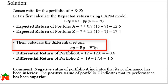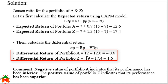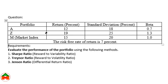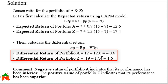Alpha p indicates the differential return, calculated by deducting the expected return from the actual return. For Portfolio A: actual return is 12%, expected return is 12.6%, so the differential return = 12 − 12.6 = −0.6. For Portfolio Z: actual return is 19%, expected return is 17.4%, so the differential return = 19 − 17.4 = +1.6.